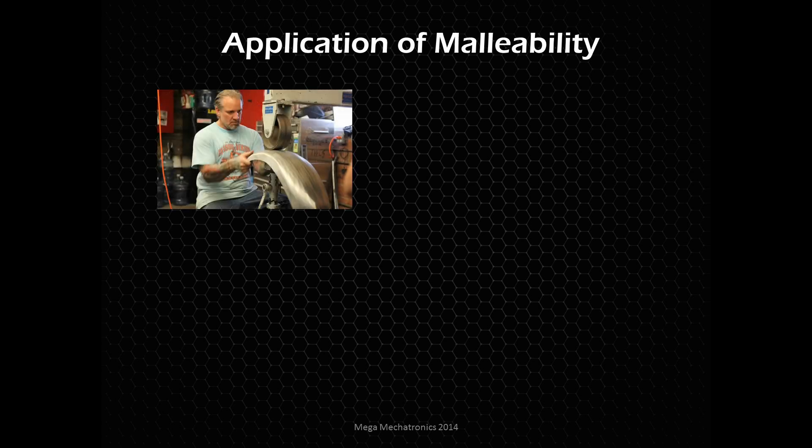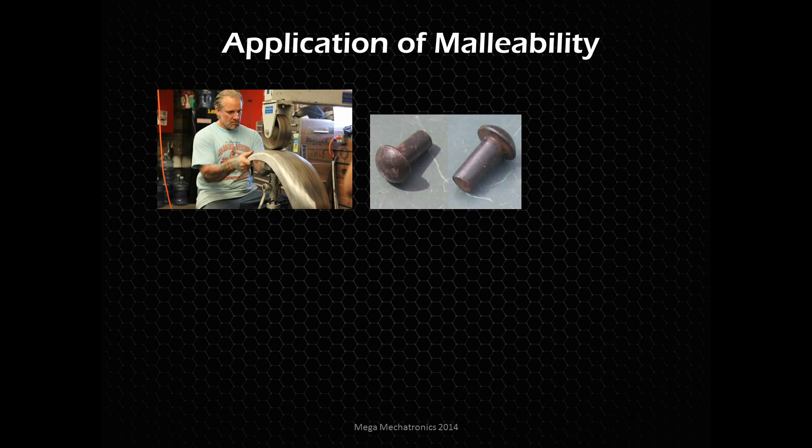An application of malleability — we're crushing the material. You see an English wheel here, applying pressure between two rollers, and you roll that material through. It does stretch it a little bit, but you are applying a compressive stress to that material. So that fender he's working on started off life as much flatter, and you can see it's taking shape. That takes a lot of skill.